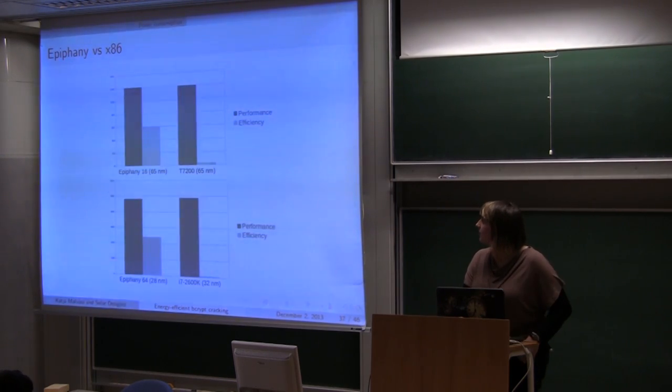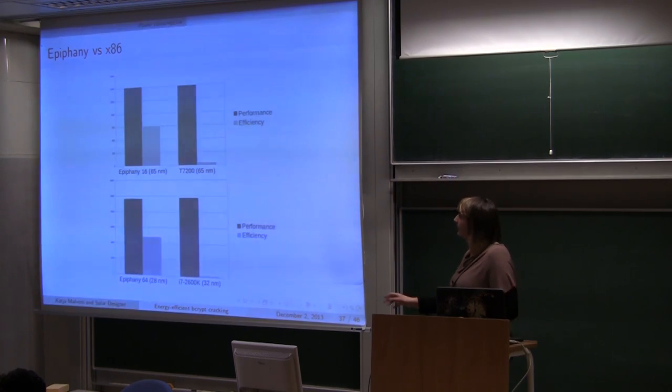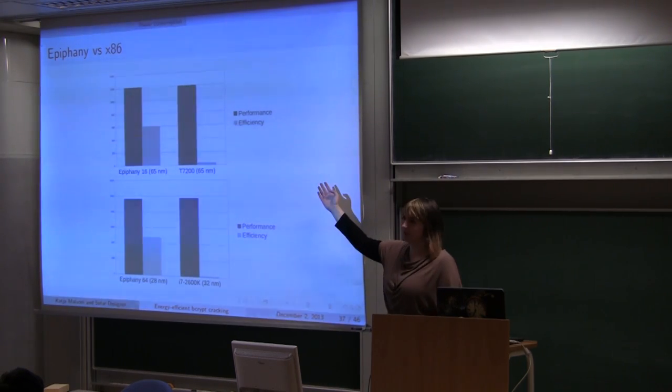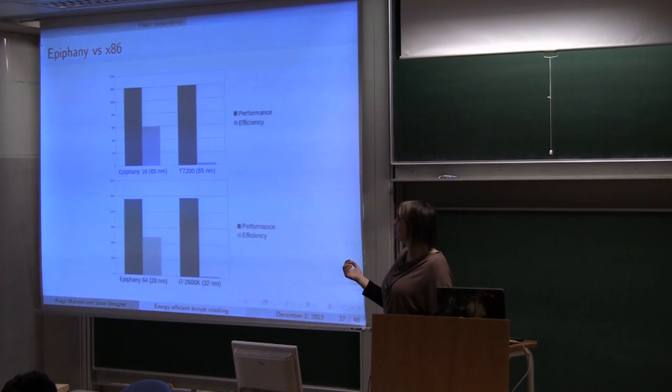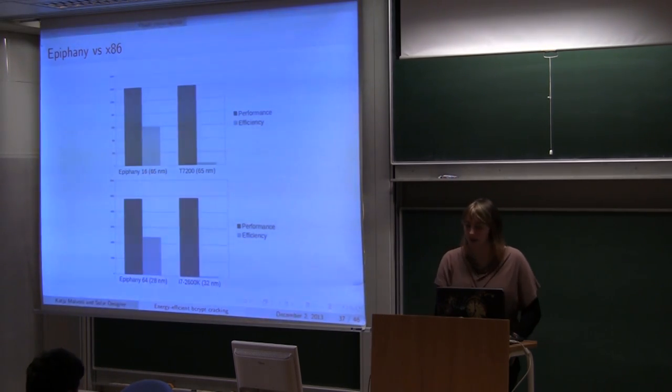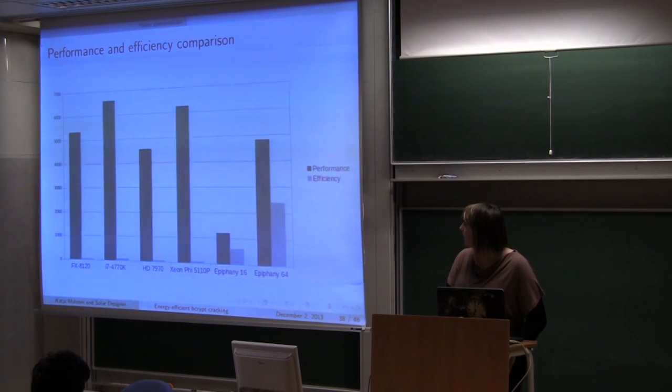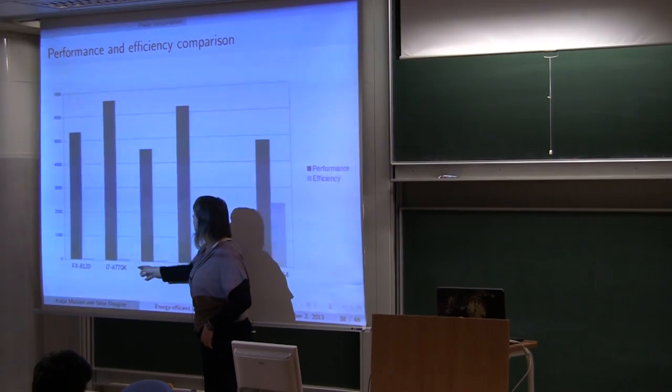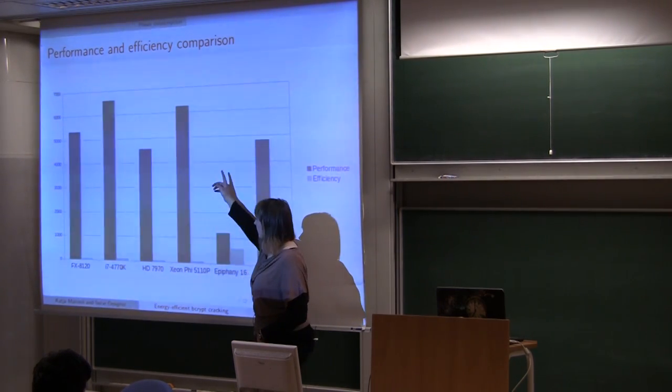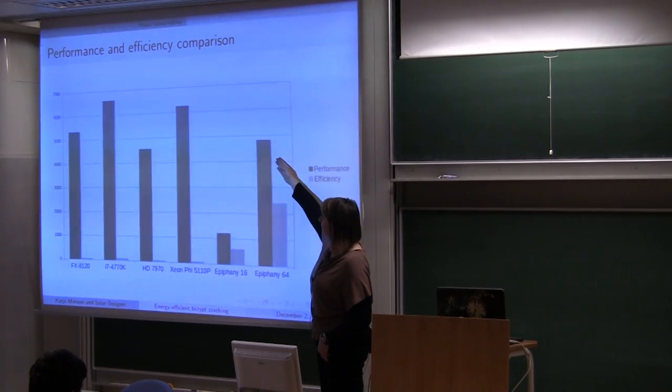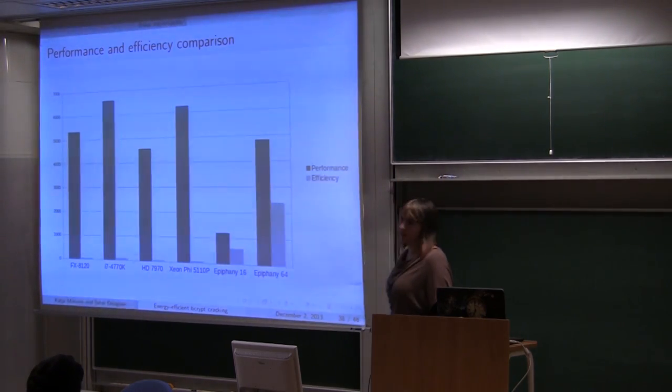So how it looks like when we compare similar lithography. So we are comparing Epiphanies to x86 cores. We can see that performance is pretty much the same. Efficiency is much higher on Epiphany platforms. That holds true for Epiphany with 16 cores and here for Epiphany with 64 cores. In total for what we have, again, we see for Xeon Phi GPU and CPUs that performance numbers are high while efficiency is low. But for Epiphany it's still nice performance comparable to CPUs and much higher energy efficiency.